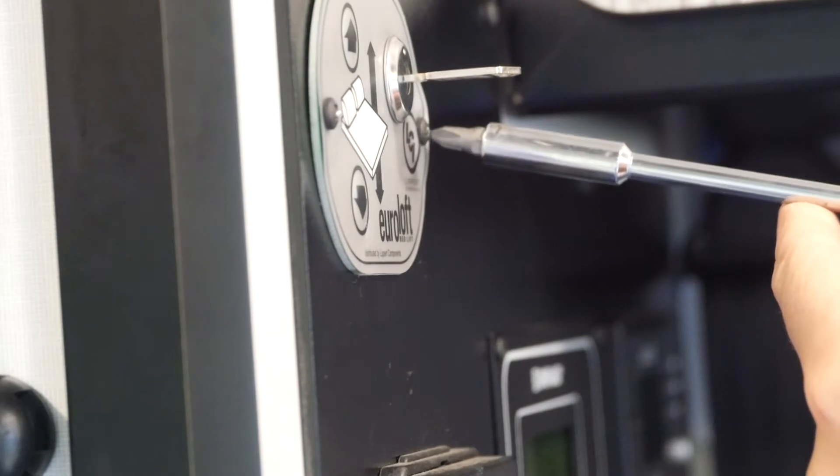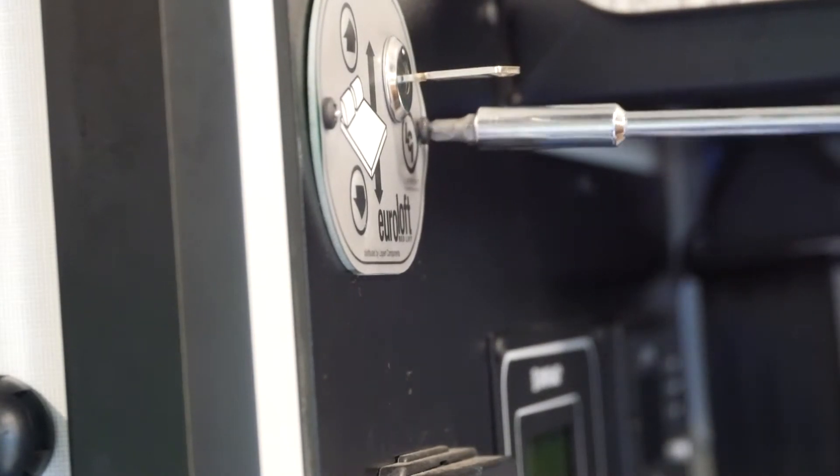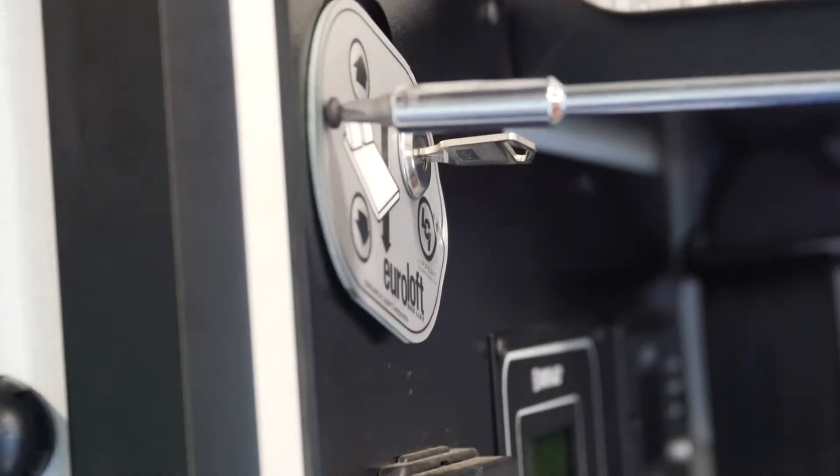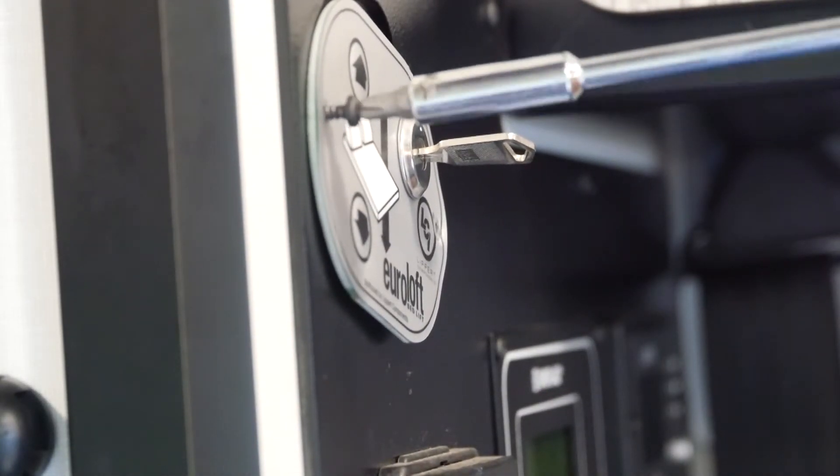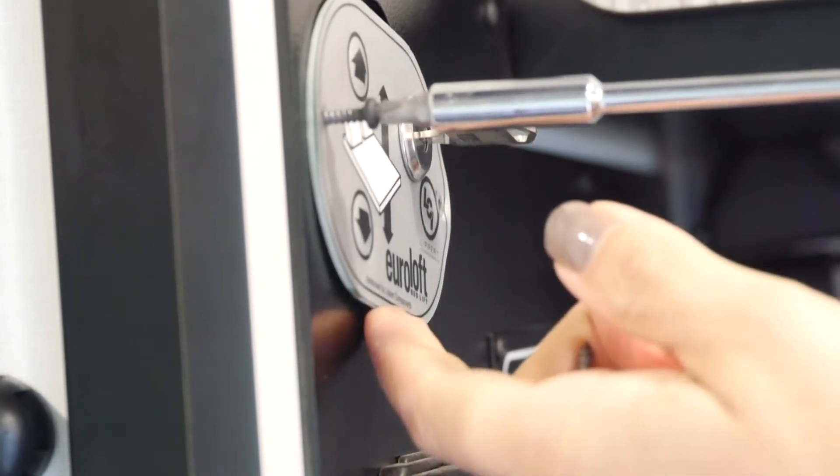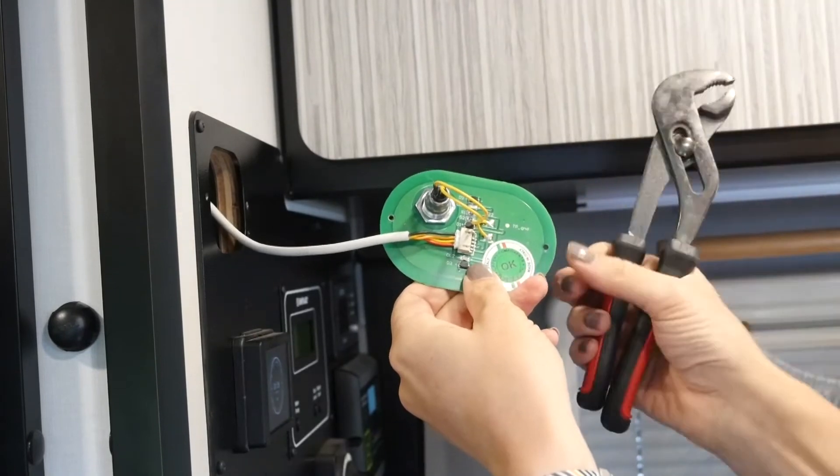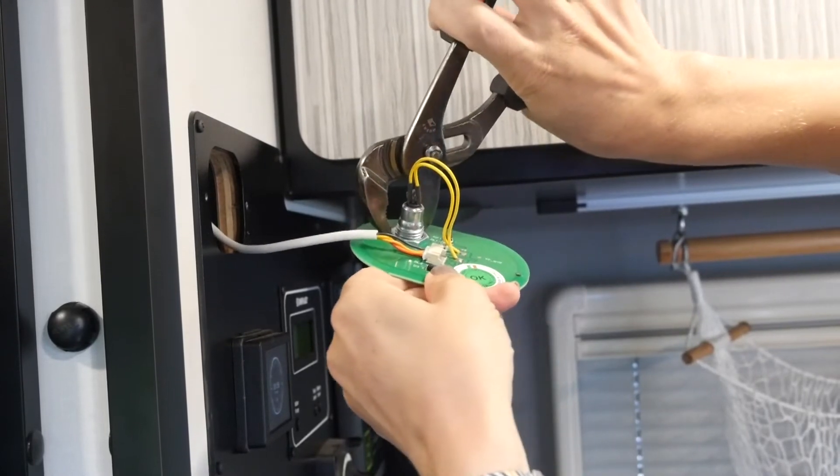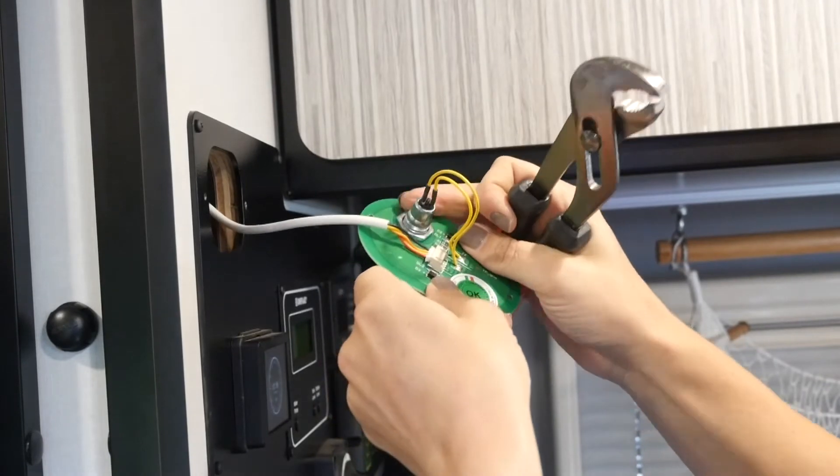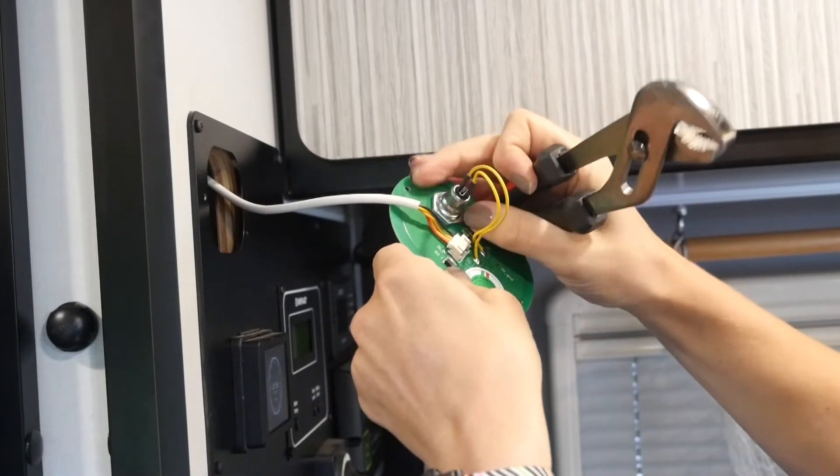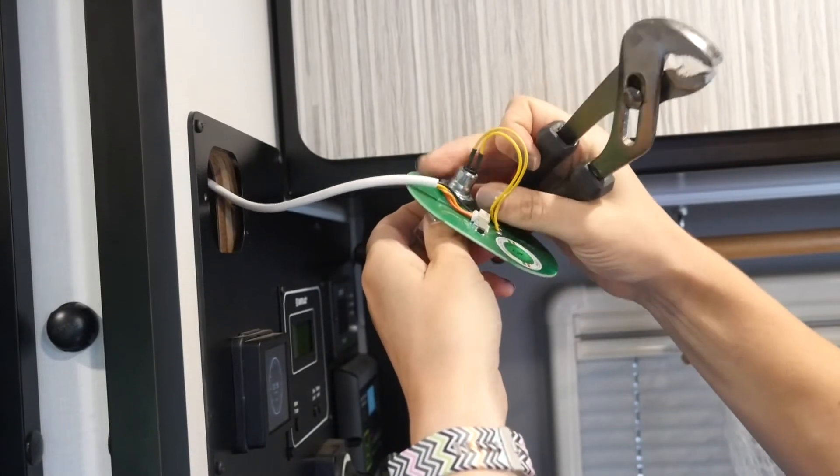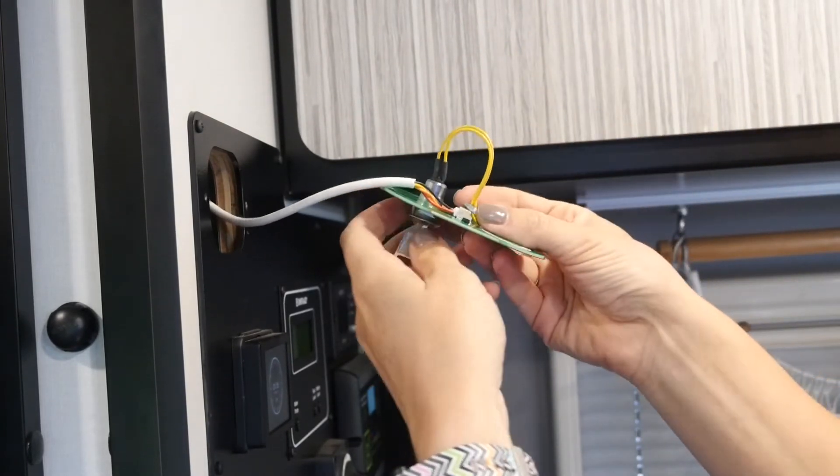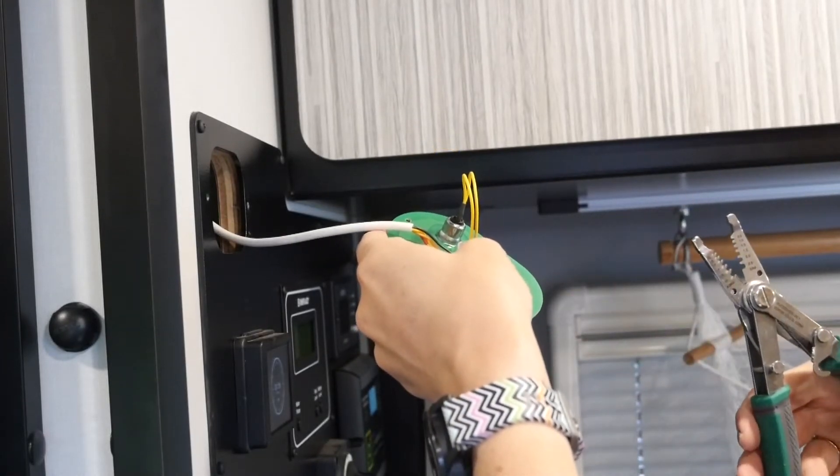First we unscrew the panel and remove this piece so that we can get the key out. Next we are doing the scary step of cutting the wire.